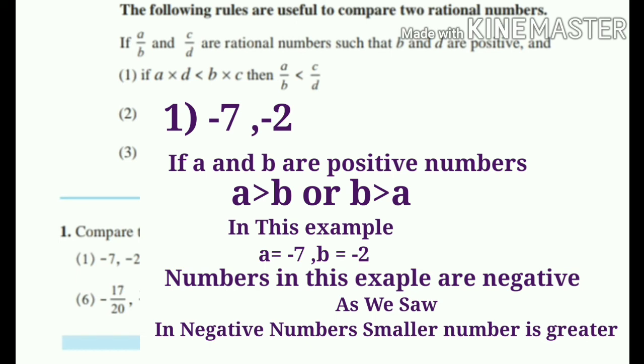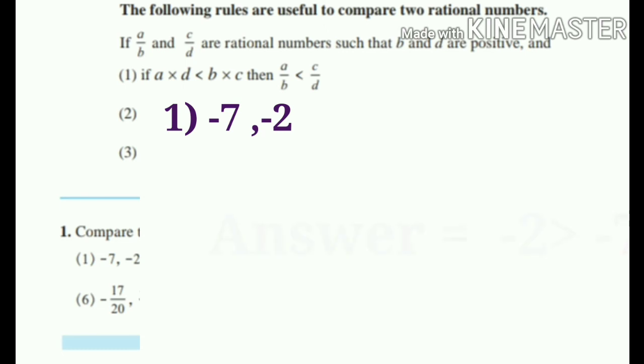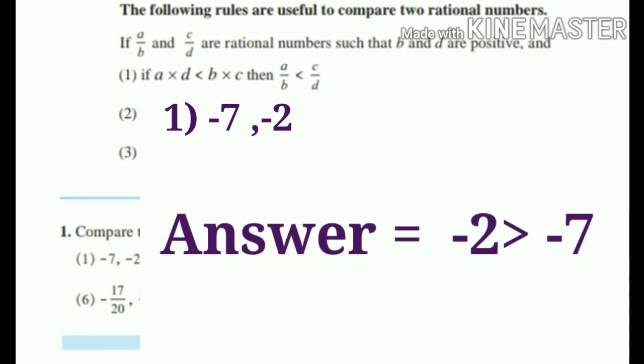Numbers in this example are negative. As we saw, in negative numbers, smaller number is the greater. So, what will be answer? Minus 2 is greater than minus 7 is the final answer.